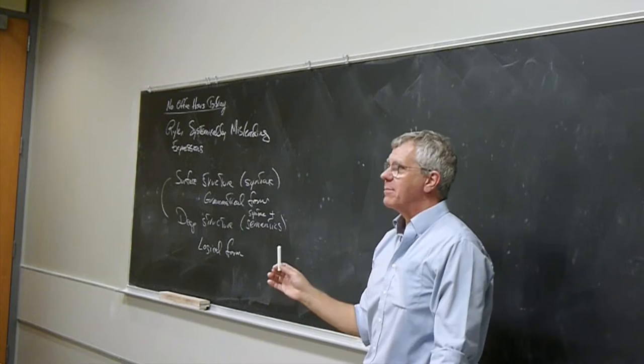The present king of France is bald means something different. To go back to Russell, it's really a threefold claim: there is a king of France, there's only one king of France, and every king of France is bald. Russell's analysis says 'the F is G' means: there is an F, there is at most one F, and that F is G.